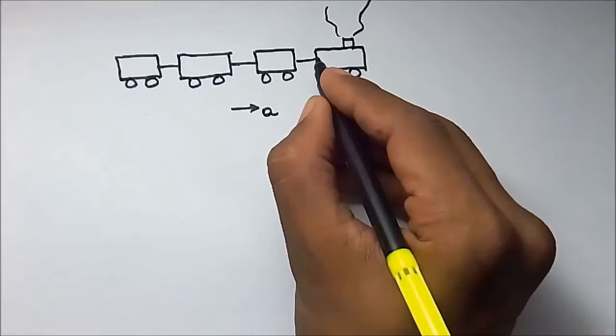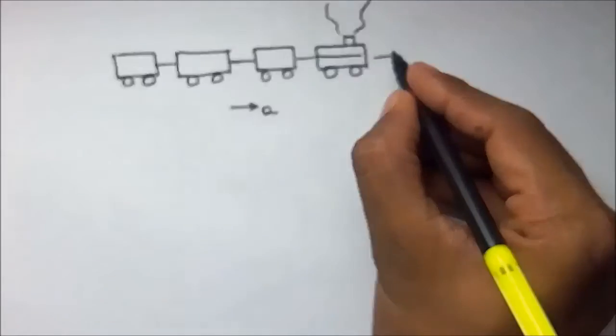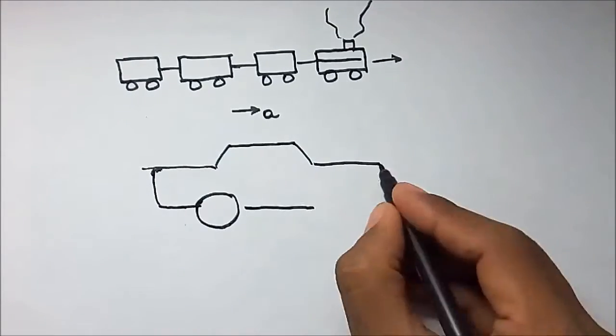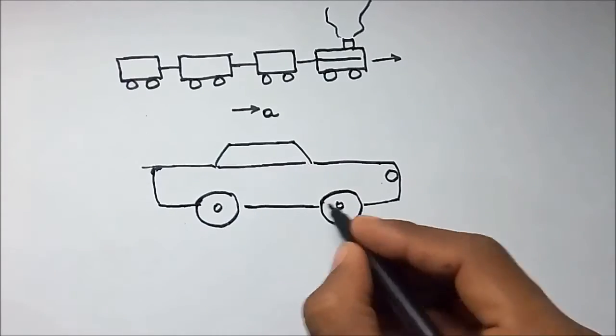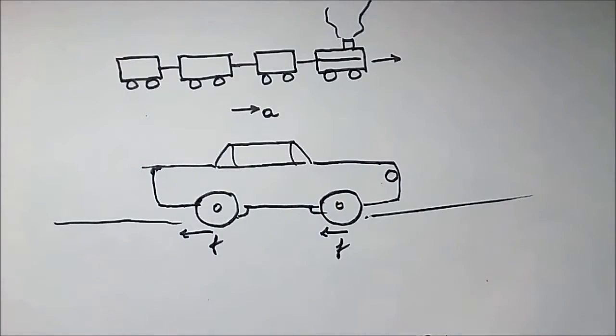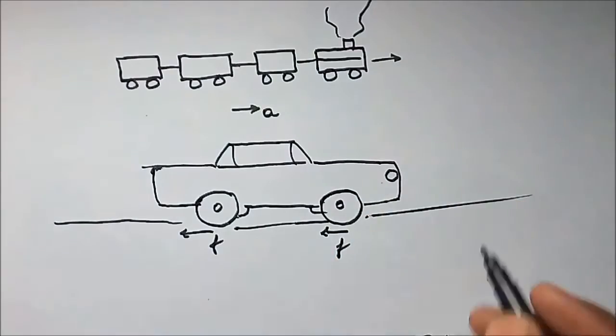For example, the wagons of the train can only be accelerated when an engine is attached to them. This provides the necessary external force required to accelerate them. A speeding car can only be brought to rest due to the frictional force produced when you apply the brakes.